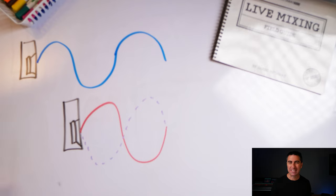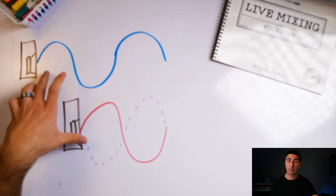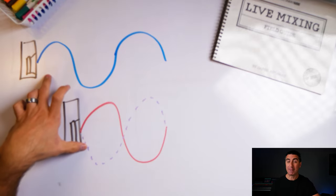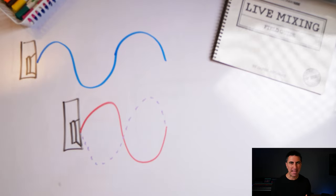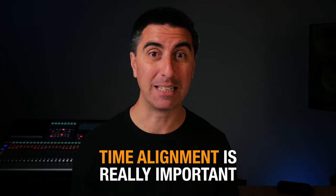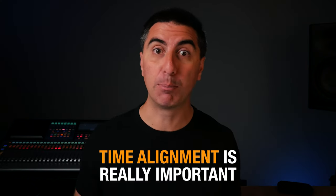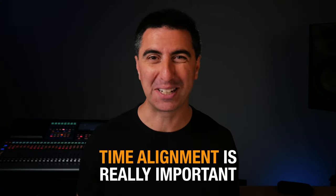The problem is that flipping the polarity on a speaker flips the polarity on all frequencies. So while some frequencies might now be in phase, we've actually made other frequencies out of phase. That's why time alignment is really important in audio to get great results.